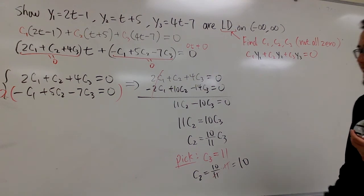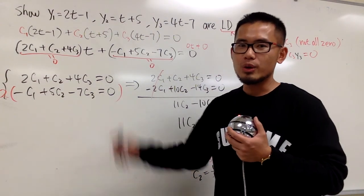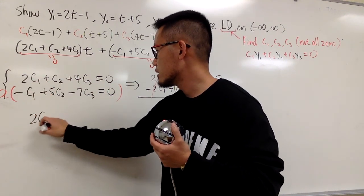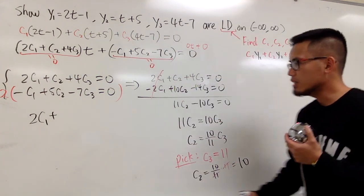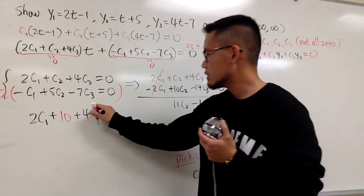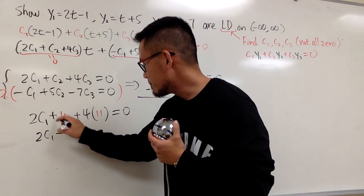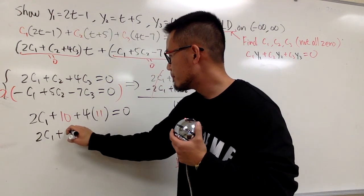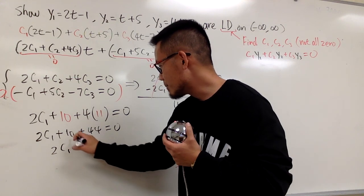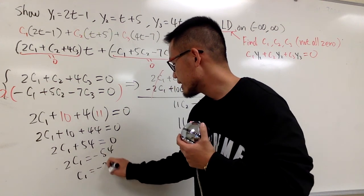And at the end, don't forget to find c1 as well. We have c2 and c3 now. Plug them in here, pick either equation, perhaps I will pick the top one, I'll use the first one. So I will say, this is 2c1 plus c2, which is 10, and then plus 4, and c3 is 11, put in 11 like this, make it equal to 0. Solve this, 2c1 plus 10 plus 44 equals to 0. 2c1 plus 54 equals to 0, 2c1 equals to negative 54, c1 equals to negative 27.